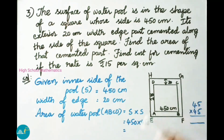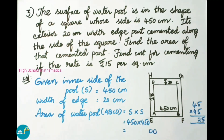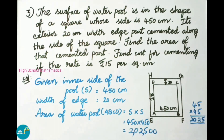We find the area of water pool ABCD. The pool is square-shaped, so area equals side into side, which is 450 into 450. For quick multiplication of 45 into 45: 5 fives are 25, and since the first digits are the same (4), multiply 4 by its next number 5 to get 20, giving 2025. With two zeros appended, area of water pool is 2,02,500 square centimeter.